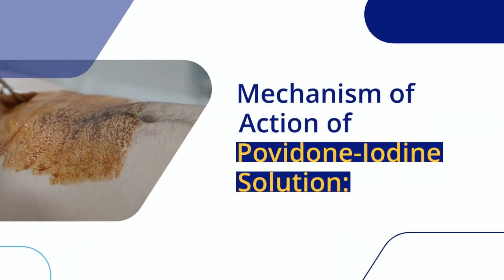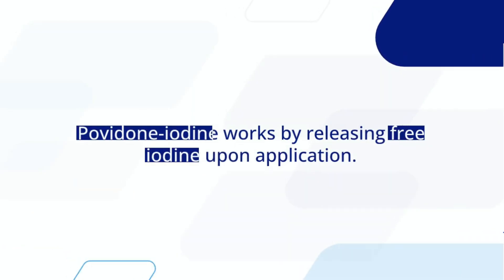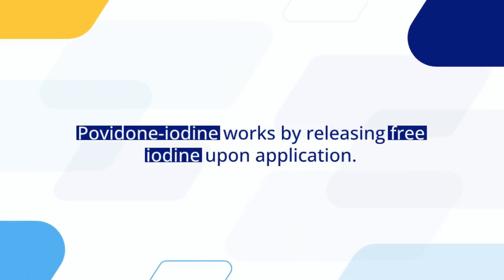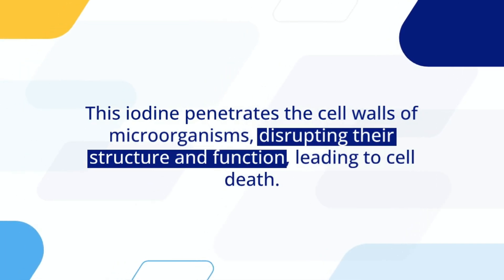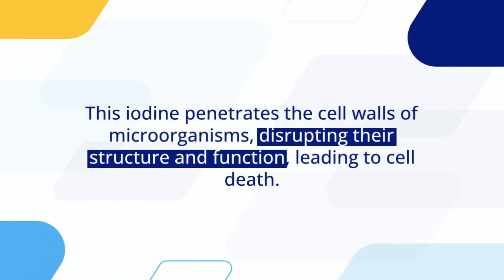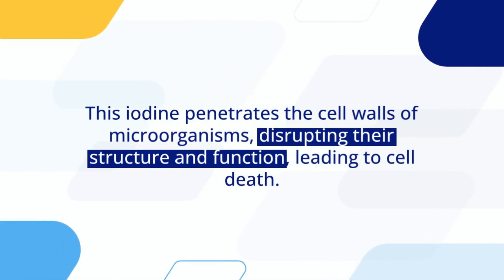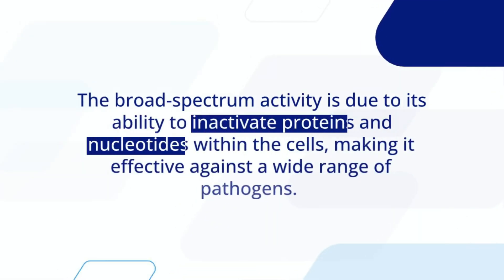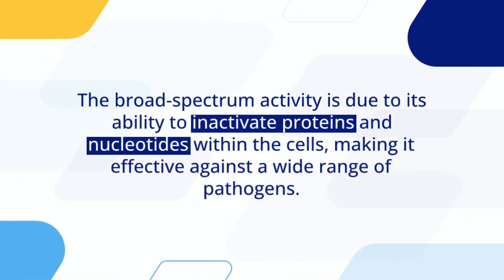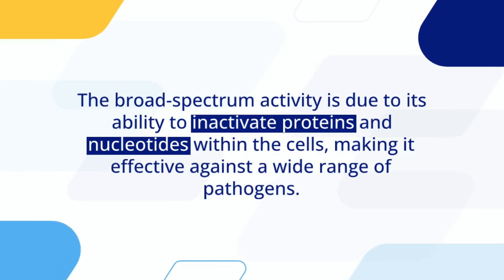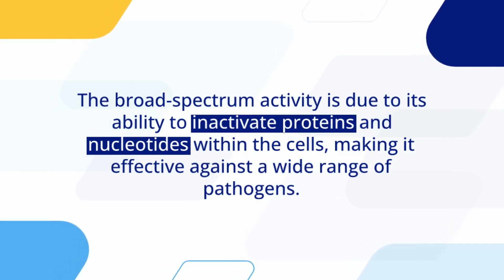Mechanism of action of povidone iodine solution. Povidone iodine works by releasing free iodine upon application. This iodine penetrates the cell walls of microorganisms, disrupting their structure and function, leading to cell death. The broad-spectrum activity is due to its ability to inactivate proteins and nucleotides within the cells, making it effective against a wide range of pathogens.